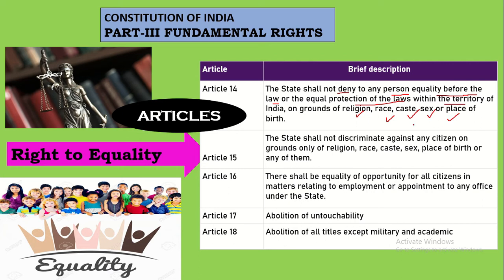Article 15 deals with the provision that the state shall not discriminate against any citizen on the grounds of religion, race, caste, sex, or place of birth, or any of them. Article 15: the state will not discriminate you on any grounds. Article 14 deals with shall not deny equal opportunity; Article 15 deals with the state shall not discriminate against you.